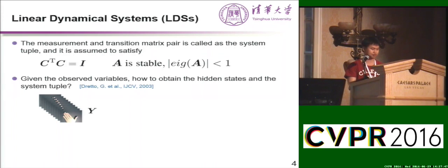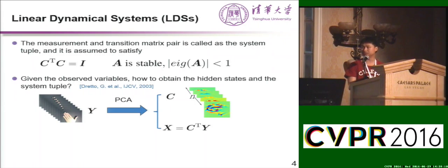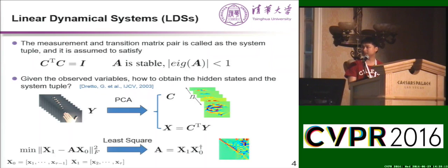One popular way is proposed by Duranto et al. in 2003, and the idea is straightforward. They first apply PCA on the time series Y. The first n principal components create the matrix C. When we obtain matrix C, we can compute the hidden state X by C transpose Y. When we obtain the hidden state X, we can determine the transition matrix by solving the least squares problem.